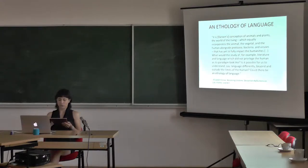In her recent book Becoming Undone: Darwinian Reflections on Life, Politics and Art, Elizabeth Grosz, a feminist philosopher whose work has attempted to address biological configurations of bodies from a non-essentialist, non-dualist perspective and who has more recently turned towards explorations of animal life and art, urges scholars in the humanities to consider non-human forms of life and materiality. I quote: What would the study of, for example, literature and language which did not privilege the human as its paradigm look like? Is it possible for us to understand language differently beyond and outside the limits of the human? Could there be an ethology of language? Writing about the implications of Charles Darwin's work for the humanities and the manner in which his understanding of evolution de-centers the privileged position of the human, Grosz goes on to suggest that it is Darwin's conception of animals and plants, the world of the living which equally incorporates the animal, the vegetal and the human alongside protozoa, bacteria and viruses, that has yet to fully impact the humanities. More recently this broader turn towards the non-human has allowed developing interdisciplinary fields such as animal studies to assume more presence within the humanities disciplines and has opened up a complex set of conceptual relations between considerations of animate forms of non-human biological materiality and emergent theories of the ways in which inanimate forms of matter may be sites of agency and indeterminacy.